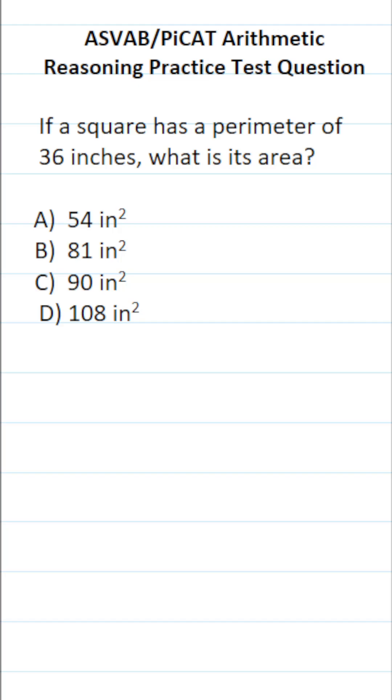This arithmetic reasoning practice test question for the ASVAB and PiCAT says, if a square has a perimeter of 36 inches, what is its area?